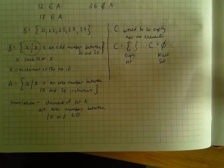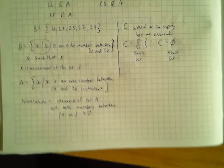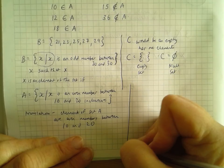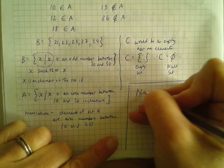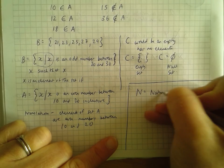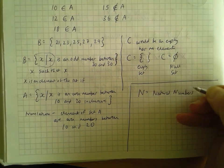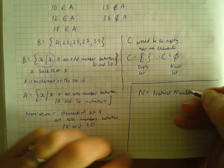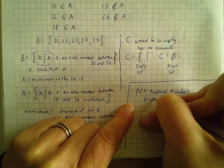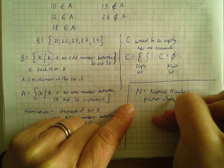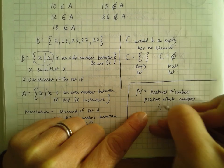We need to look at three particular number sets. N, if you remember, is the set of natural numbers — the numbers you learnt in primary school, the counting numbers. They are positive whole numbers: 1, 2, 3, 4, 5, and so on.